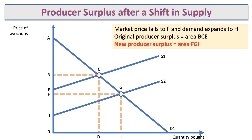The new producer surplus is area FGI, which is a bigger area. The producer has benefited from the lower cost bumper harvest. Yes, the market price has come down because of the extra production of avocados, but producer surplus has also gone up.